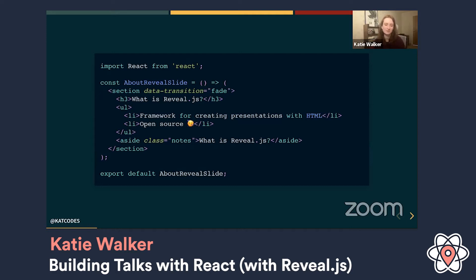How Reveal knows that this is a slide is because of that section element. What you do is import this slide into a master list of slides and it does some magic and puts them together. I've given it the property data-transition equals fade, which tells Reveal I want a fade effect when going between slides. There's also an aside with the class 'notes' — that's how Reveal knows I want speaker notes. On my other screen I've got those speaker notes up.